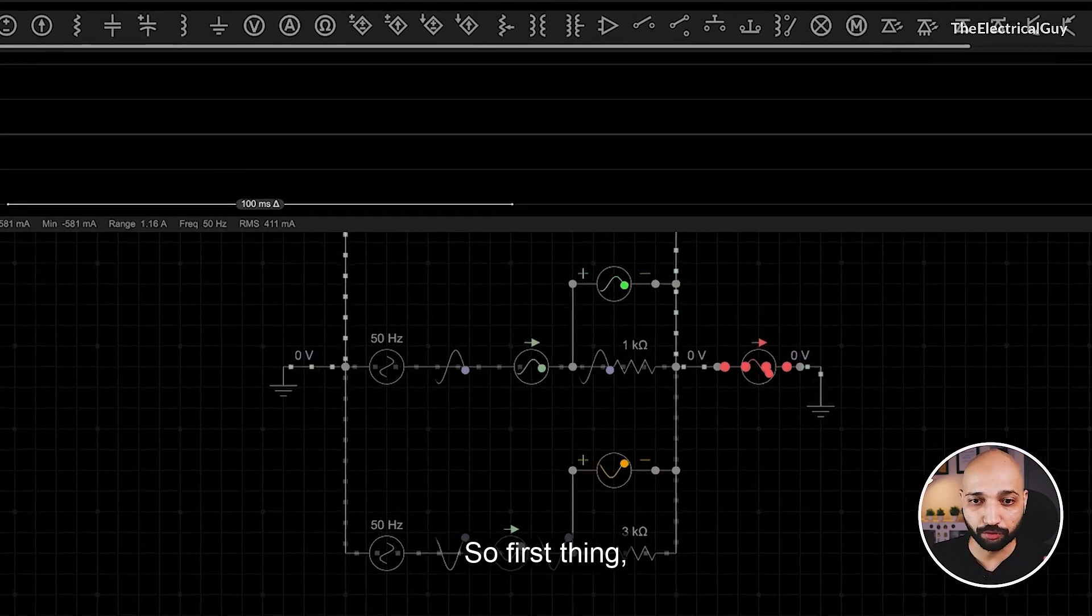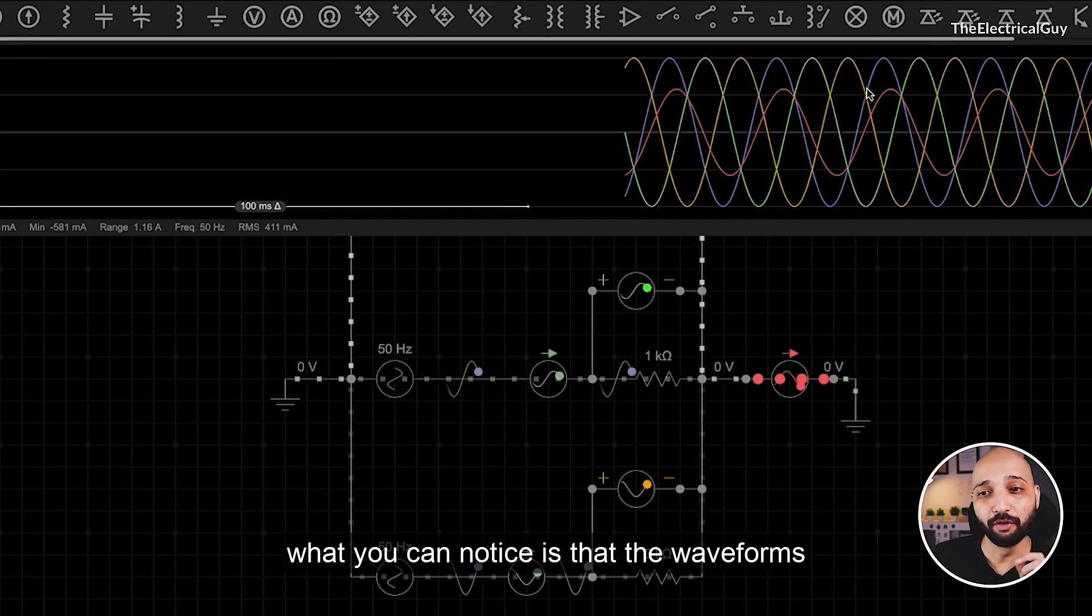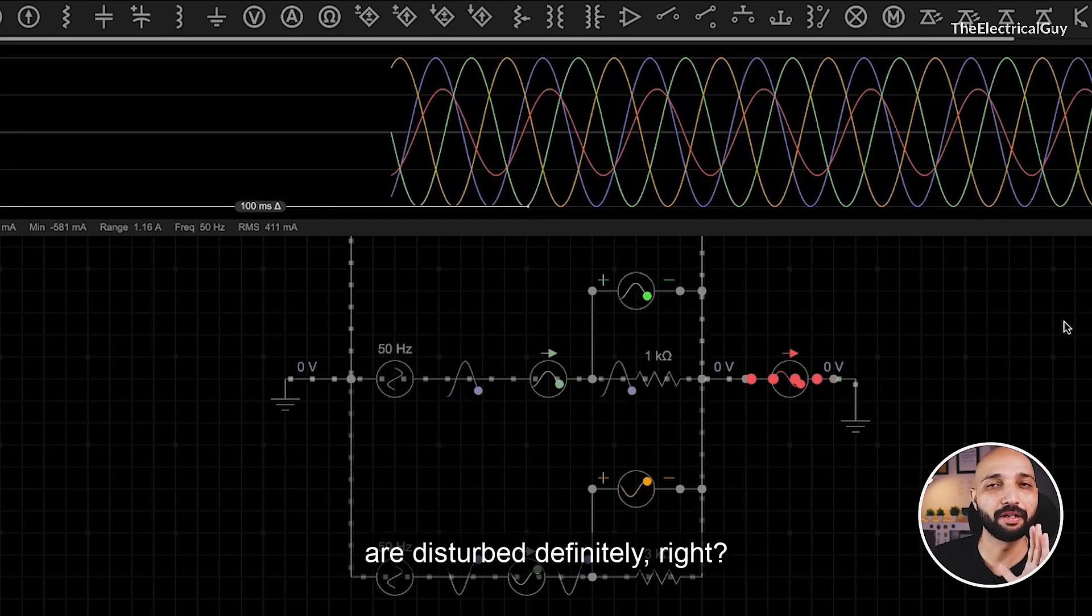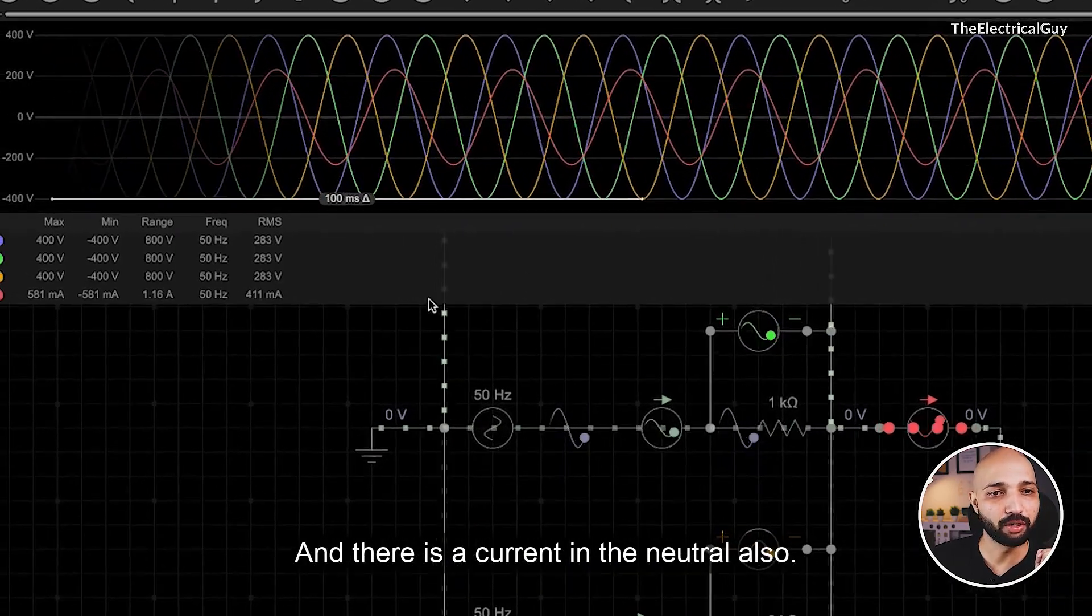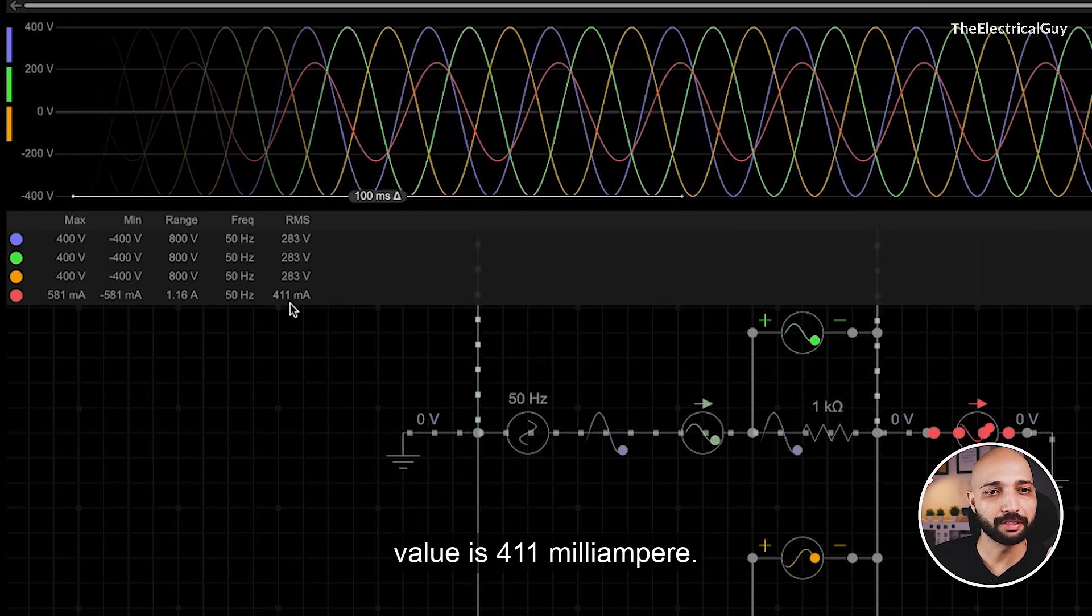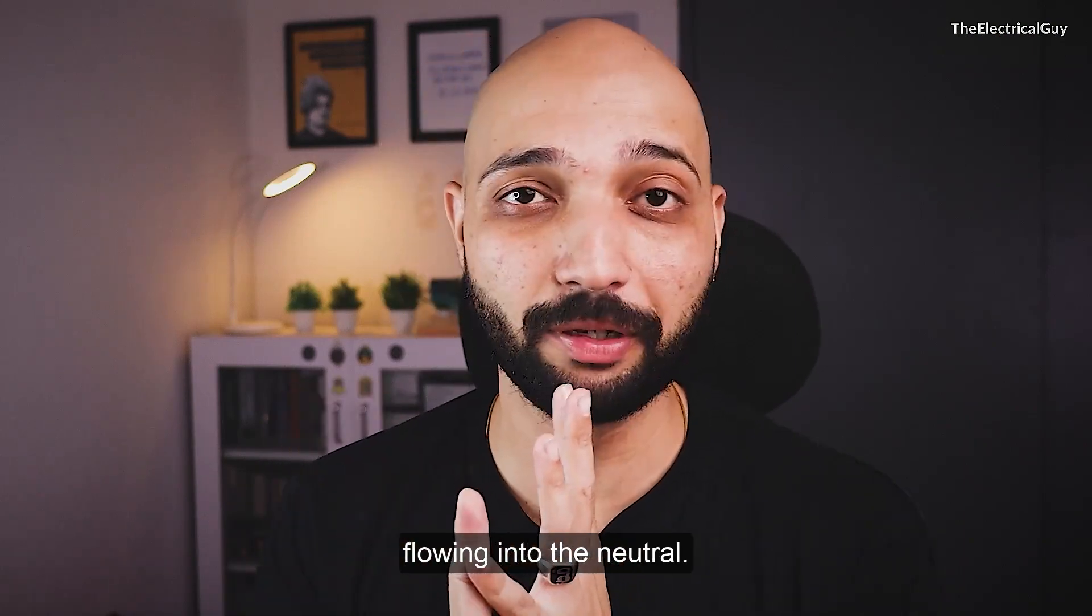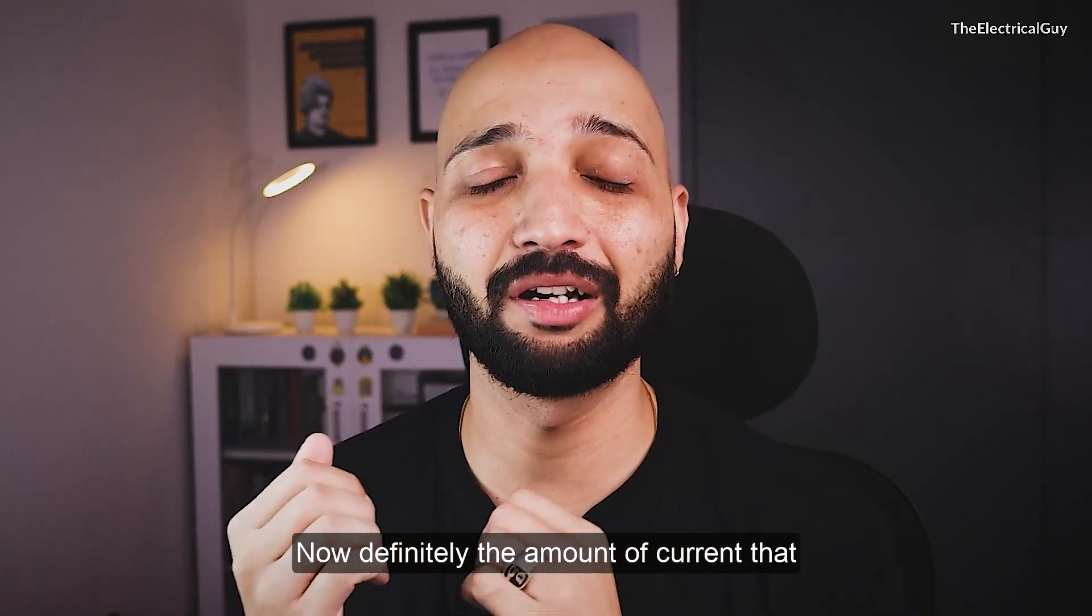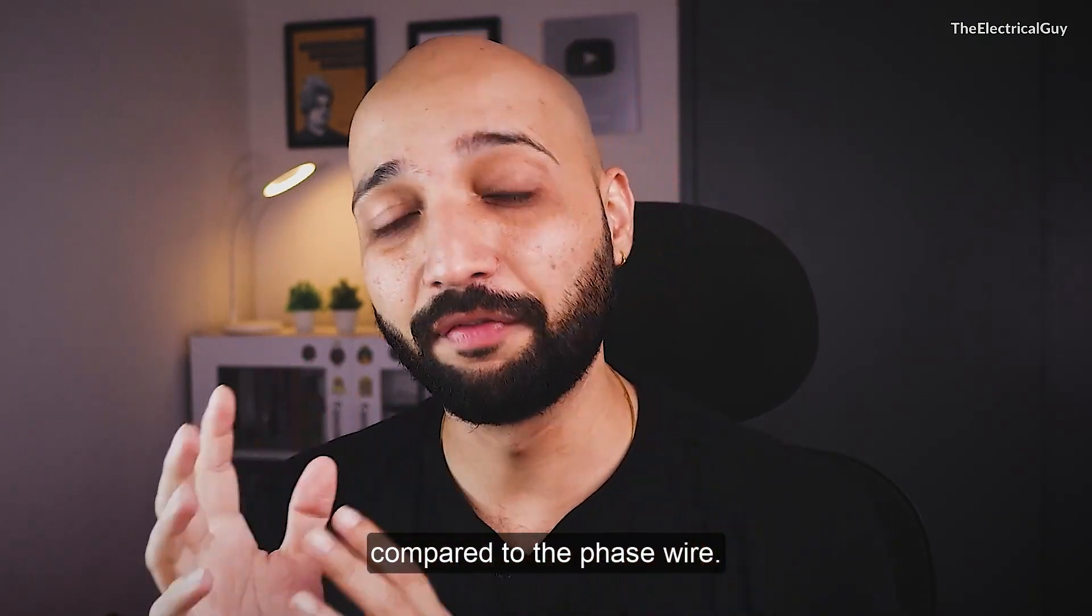First thing you can notice is that the waveforms are disturbed definitely. And there is a current in the neutral also. You see the red dot which is our ammeter - RMS value is 411 milliampere. So the current has started flowing into the neutral. Definitely the amount of current that flows into the neutral is very small compared to the phase wire.